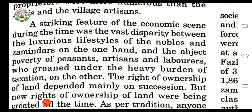The right of ownership of land was dependent mainly on succession. Succession means the condition under which one person after another succeeds to the property. New rights of ownership were being created all the time — purchase of land could be done, and the person who first brought land under cultivation was considered its owner. The zamindar had the hereditary right of collecting revenue from a number of villages, and this was called his taluk or zamindari.